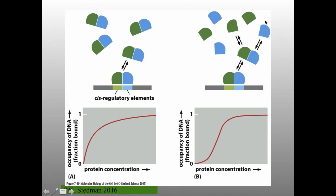A third advantage of dimers: if the protein-protein interactions are relatively weak, you can end up with cooperative binding. The dimer binds DNA very well, but individual monomers don't bind well. This means you have a much sharper transition from completely unbound to completely bound compared to a single protein — three things useful about dimers: specificity, cooperativity through protein-protein interactions, and the ability to mix and match.